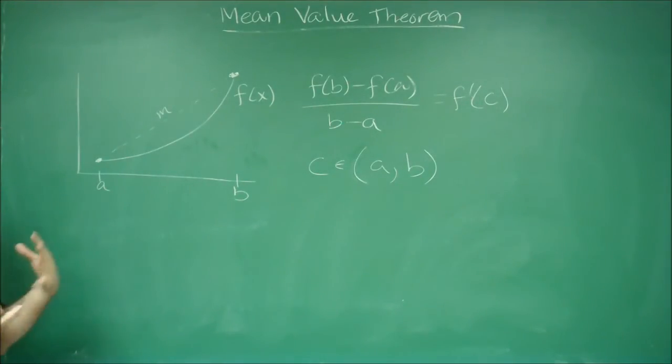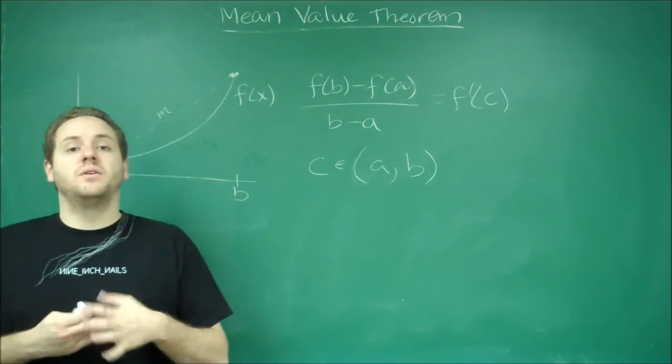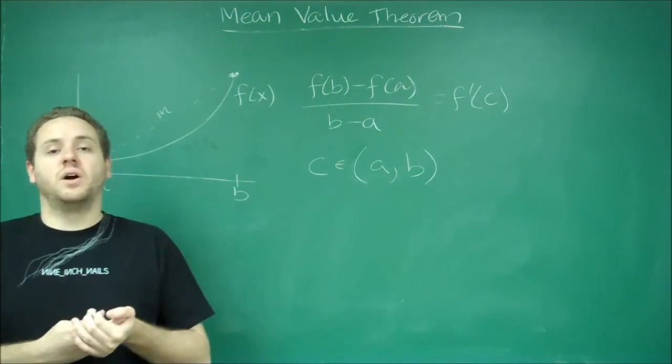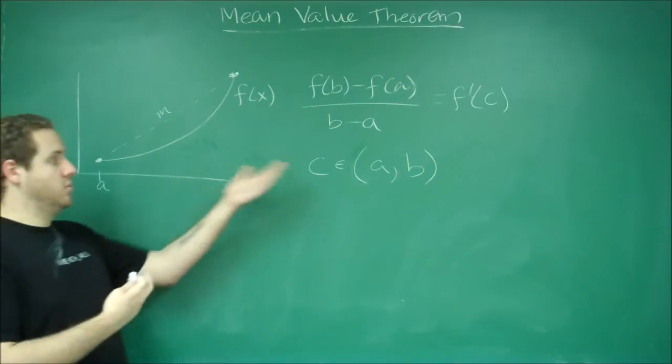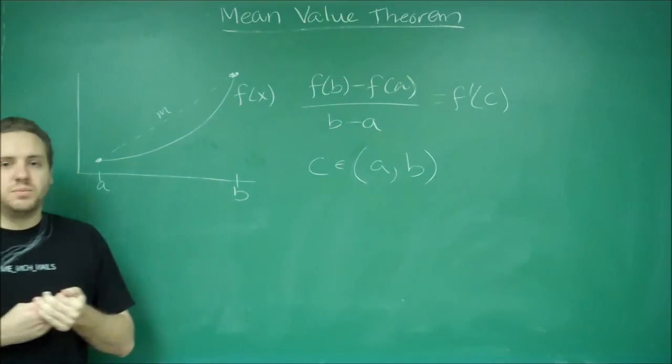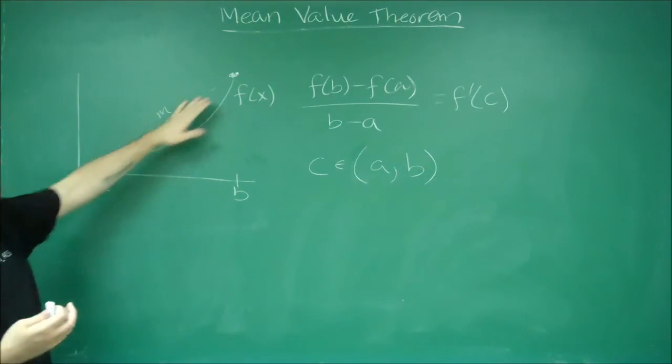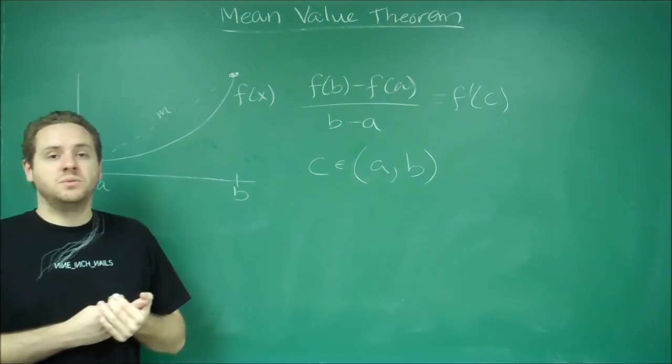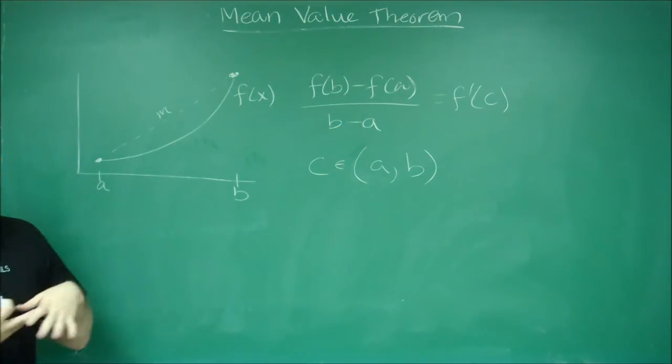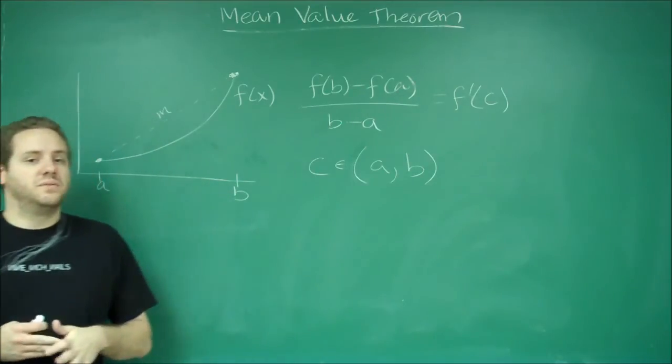But most of the questions you're going to get involving this are just questions about what the Mean Value Theorem guarantees. Which number is guaranteed by the Mean Value Theorem, for example. So if you're given a curve, always just find the slope between the endpoints if the information is given to you, then take the derivative of the function and set it equal to that number. You can then solve your derivative very simply.